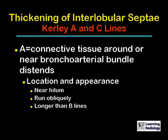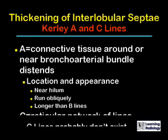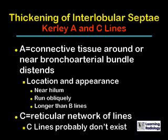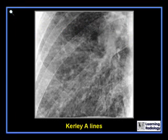Curly A and C lines: A lines are connective tissue around or near the broncho-arterial bundle, which becomes distended and therefore visible. They're located near the hilum, they tend to run obliquely, and they're much longer than curly B lines. There is some question as to whether curly C lines actually exist. An overlapping network of curly A lines will produce a fine, reticular, lacy pattern of increased interstitial markings in patients with pulmonary interstitial edema.